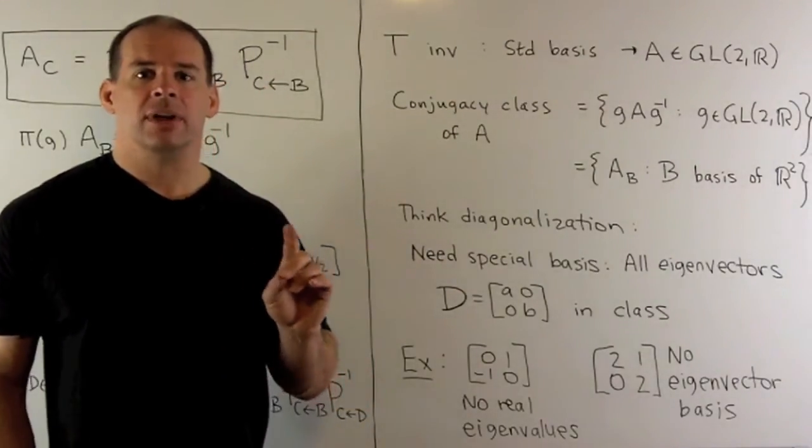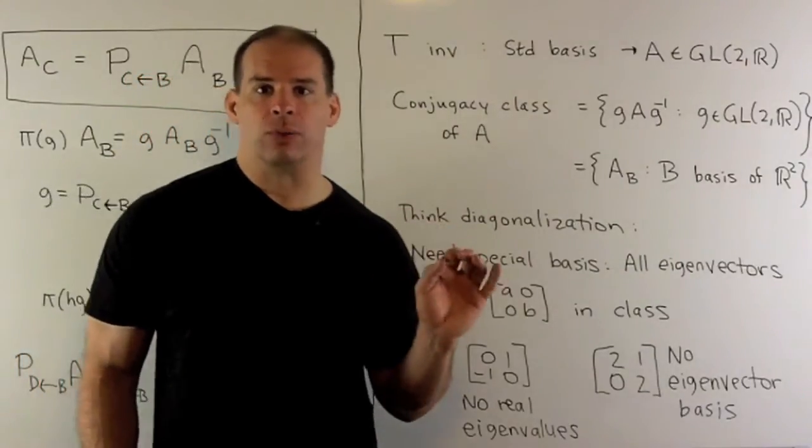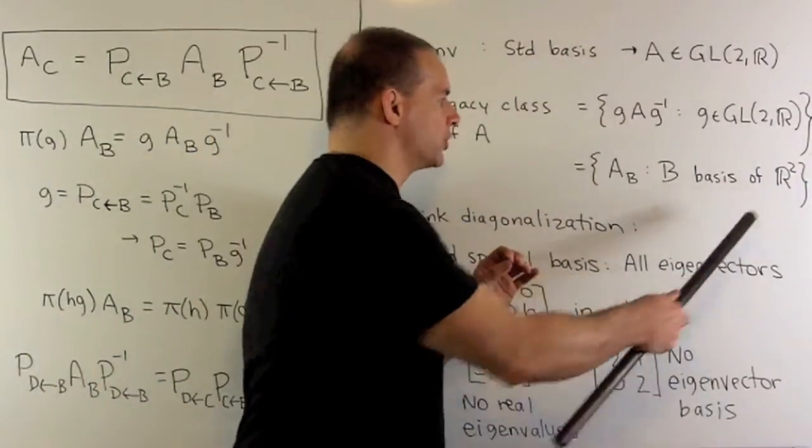Now, this is going to tie in to something that we're familiar with. So, if we have a linear transformation T that can be put in a diagonal form, what we do is we consider all bases for R².